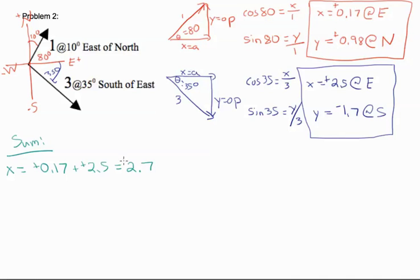And our y is positive 0.98 plus negative 1.7, and that gives us negative 0.72. And since it's negative, we know it's at south.